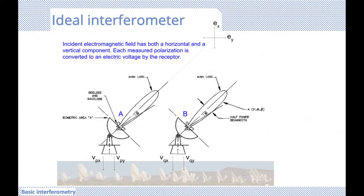Starting off with our recap: it all starts with our hunt for angular resolution. The resolving power of a telescope is our ability to separate objects located close together or at a small angular distance. Our angular resolution describes the ability of our radio telescope to distinguish small detail in the larger structure.